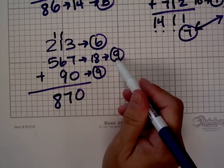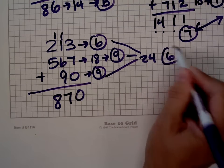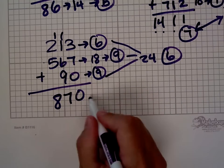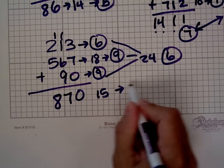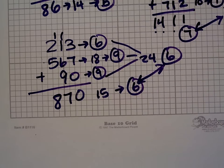9 plus 9 is 18. 18 plus 6 is 24. 2 plus 4 is 6. So my digital root is 6. What's my digital root down here? 8 plus 7 is 15. 1 plus 5 is 6. My digital roots match, so I've done my answer correctly.